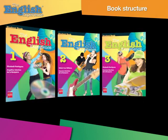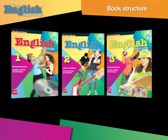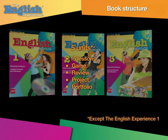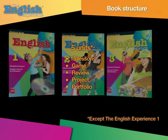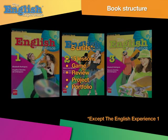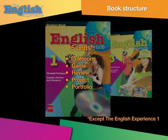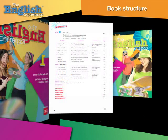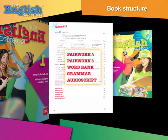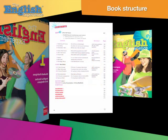To sum up, the English Experience is divided into five units. Every unit is divided into fifteen lessons. Each unit also contains the following sections: Game, Review, Project, and Portfolio. In addition, the English Experience has four sections of additional material at the back of the book: Pairwork, Wordbank, Grammar, and Audioscript.